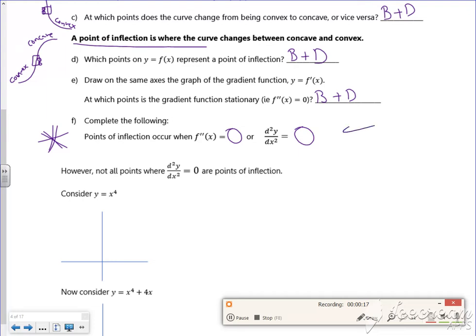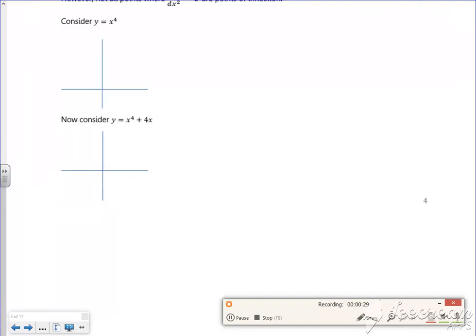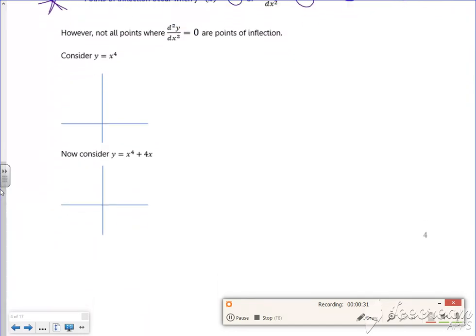Now this allows us to find the point of inflection there. So let's have a quick look. So we've got something else here that it's talking about. There's a lot of theory in this bit. So x to the 4 looks like a shallow down x squared there.